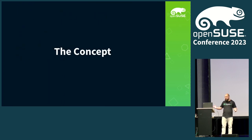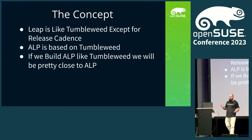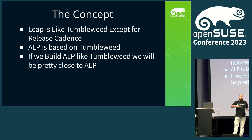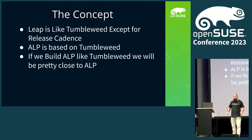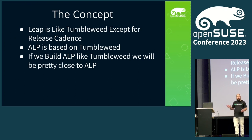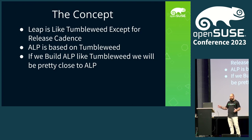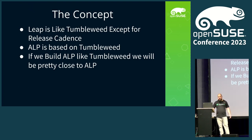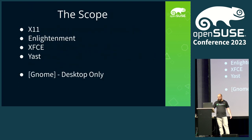The overall concept sounds pretty simple. Basically, Leap is the same as Tumbleweed except for how we do releases and how often. ALP is based off Tumbleweed, so if we build ALP the way we build Tumbleweed, surely we get something like Leap. Normally when an idea in software sounds that simple, it is not — it breaks and there are a million issues. This is the first time ever where it actually was that simple, and in a Hack Week we managed to achieve what we were heading out for.